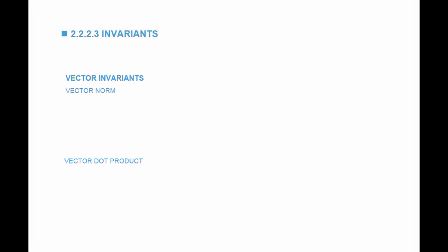In the study of continuum mechanics, we're always looking for what we call invariants — these are values that do not change when I change the basis set of my coordinate system. For example, if I have a coordinate system made out of e1 and e2, a vector u has new coordinates if I choose a totally new coordinate system. The first invariant is the norm or size of the vector. The norm of u squared, as we studied in Euclidean vector spaces, is equal to u dot u.